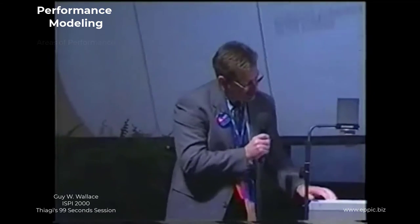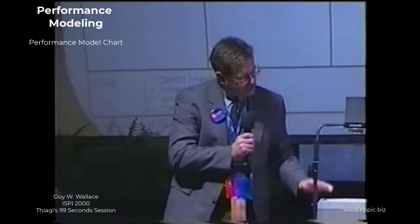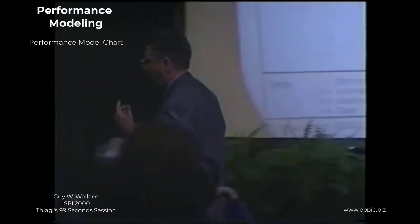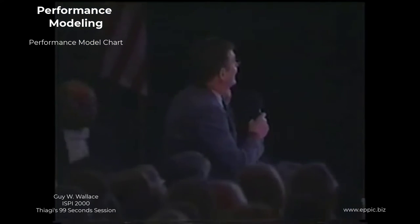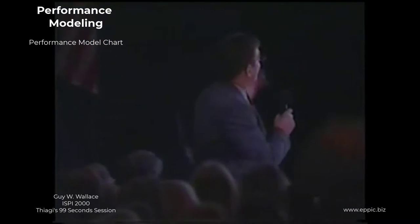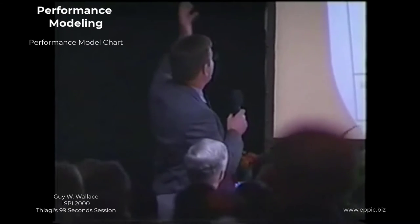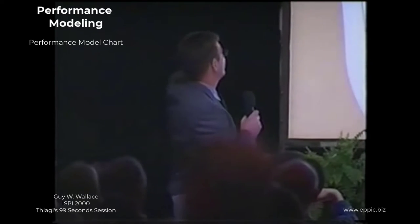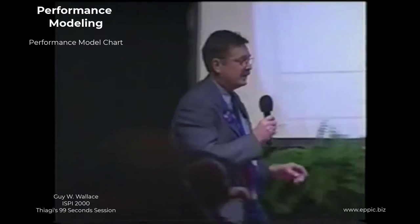When you take one of those chunks, you can do this performance model which contains two parts. On the left-hand side is ideal performance — the first three major sets of columns: the key outputs and measures, the key tasks, and the roles and responsibilities.